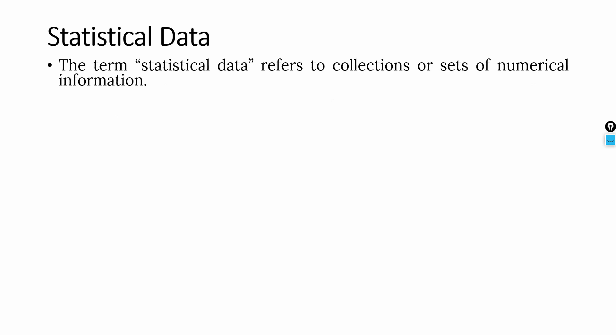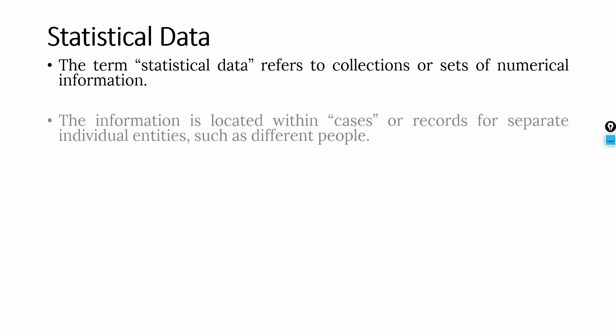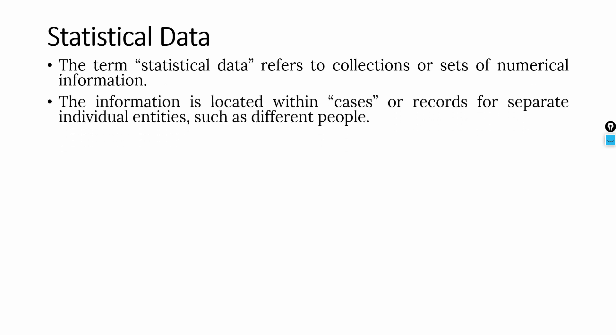The term 'statistical data' refers to collections or sets of numerical information. Since we are focusing on statistics, it has to be numbers. The information is located within cases or records for separate individual entities. We might have data based on years, like GDP per year, or responses from different people, where each response is a different case attributed to a particular respondent.